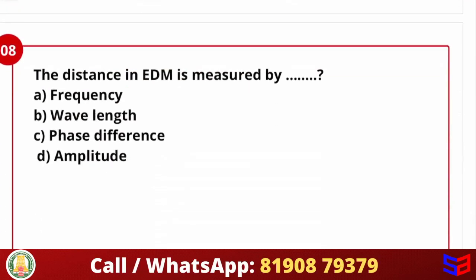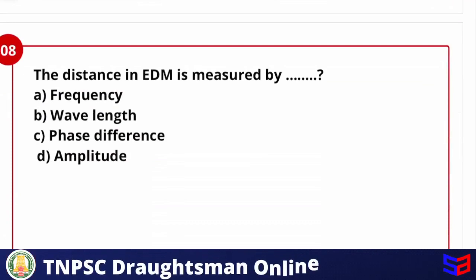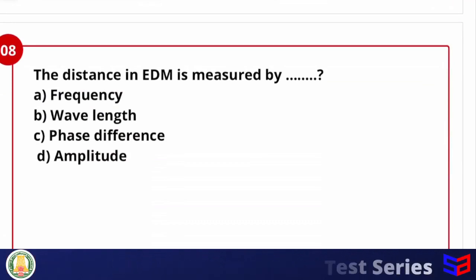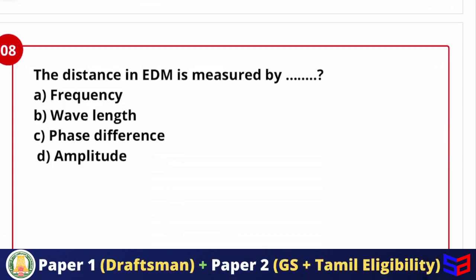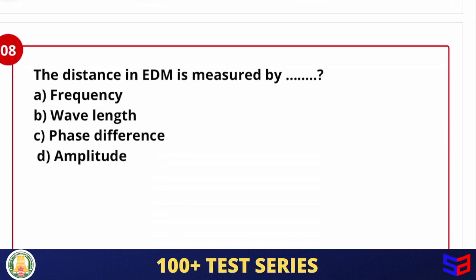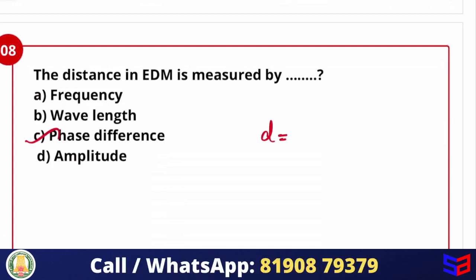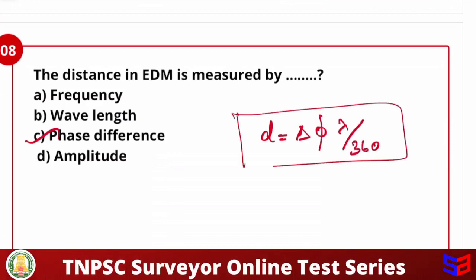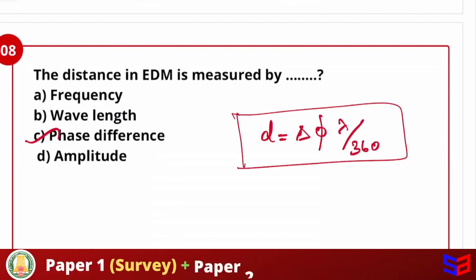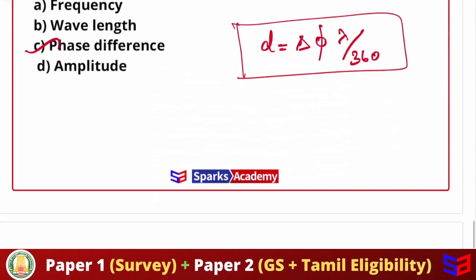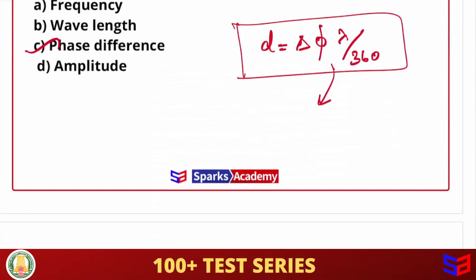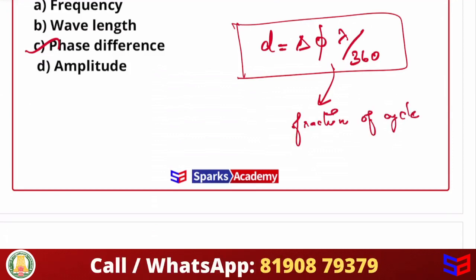So next question, the distance in EDM is measured by? So I already explained to you, EDM distance, what principle is used to be measured? Frequency, wavelength, phase difference and amplitude. So the answer is phase difference. Phase difference is used to be measured. Like the distance to be measured, D is equal to phase difference times lambda divided by 360. So in this formula, based on this, EDM distance is measured. And the phase difference, it is expressed in fraction of cycle.